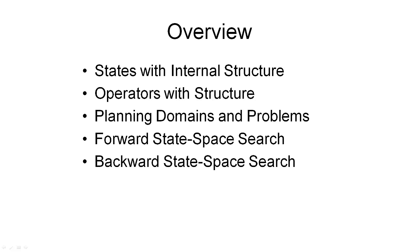In previous segments, we have looked at a general technique used in artificial intelligence to solve problems, namely search. We have seen how the efficiency of search can be greatly increased through the use of heuristics. In this segment, we will look at one of the early systems developed in AI for planning, that is the STRIPS planner. One of the advances made by the STRIPS planner was the representation used by it. The STRIPS representation still underlies much of the research done in AI planning today, and the first three parts of this segment will be concerned with the representation.